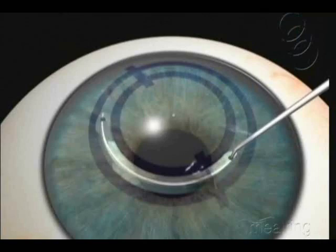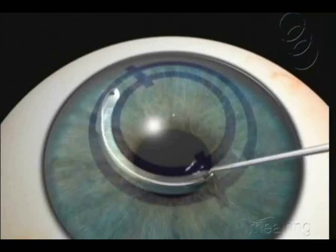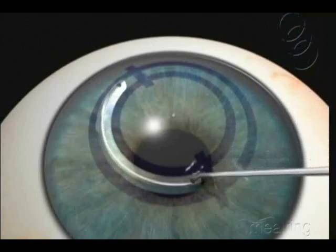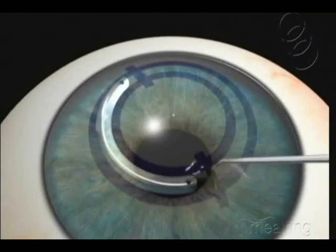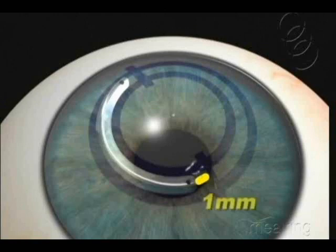Insert the Sinski tip inside the ring hole and push it into the tunnel. The ring ends have to be positioned at the same distance from the steepest meridian and at least 1mm away from the incision.